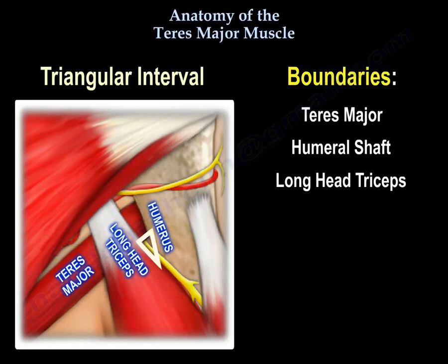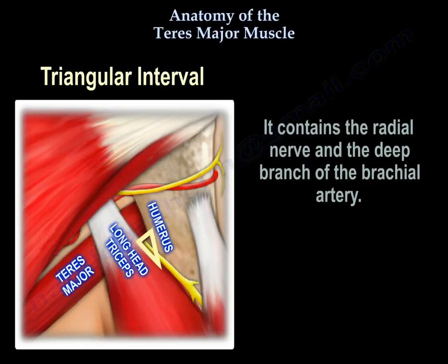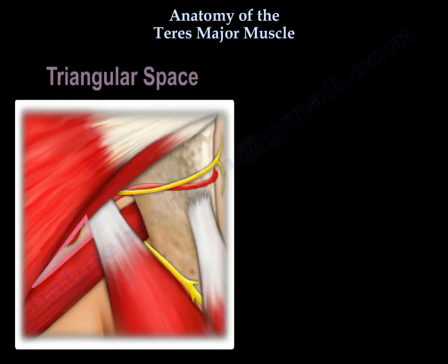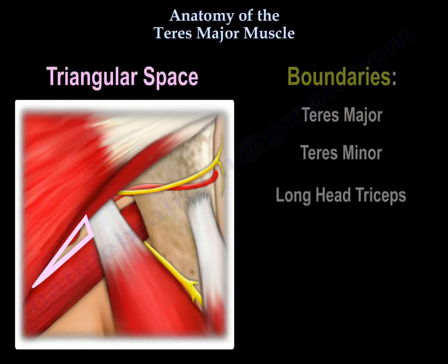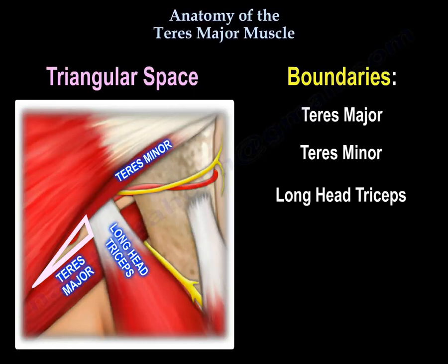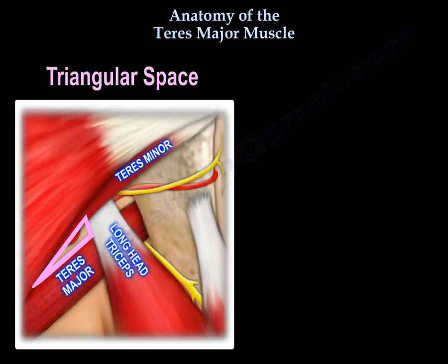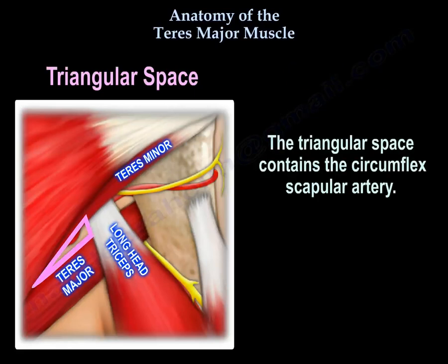The triangular interval is between the teres major, the humeral shaft, and the long head of the triceps. It contains the radial nerve and the deep branch of the brachial artery. The triangular space has boundaries formed by the teres major, the teres minor, and the long head of the triceps, and it contains the circumflex scapular artery.